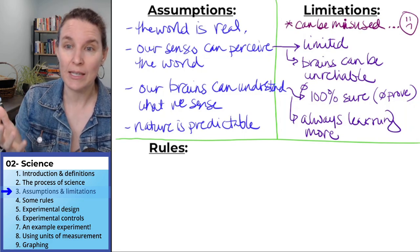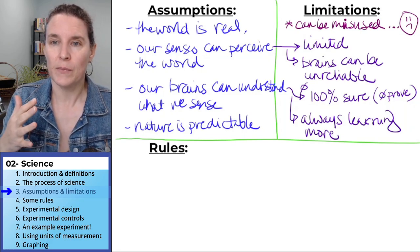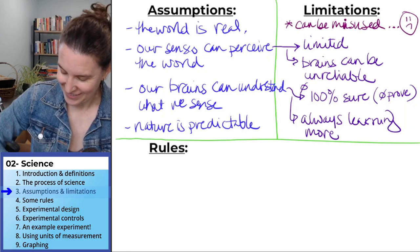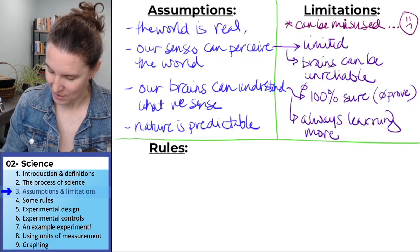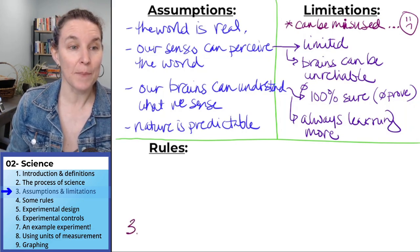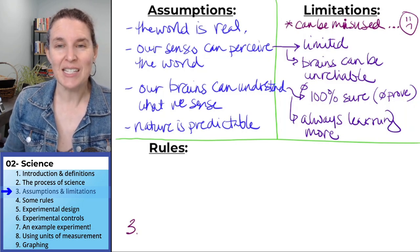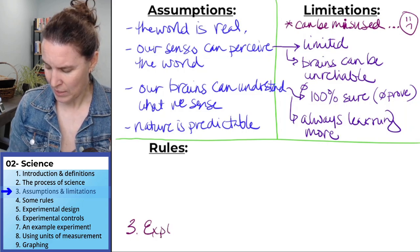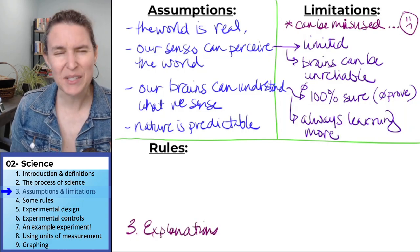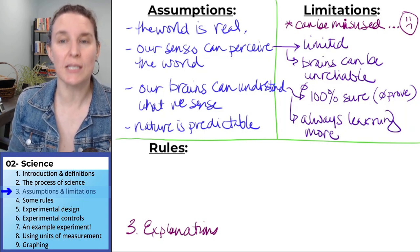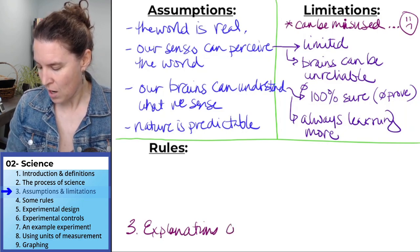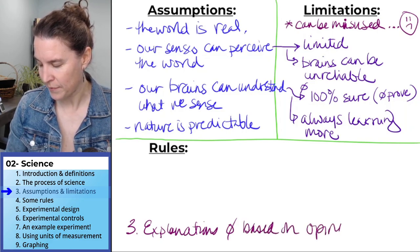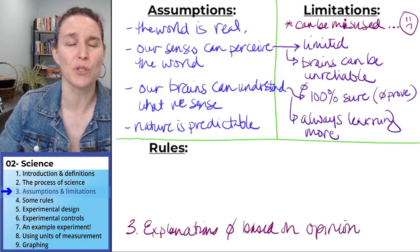And it relates to, where did we have, there's a rule somewhere. Rule number three. Let's go ahead and throw that up here. I'm going to go backwards. Your scientific explanations can't be based on opinion. Explanations or research or what you're doing with science are not based on opinion or personal values or personal beliefs.